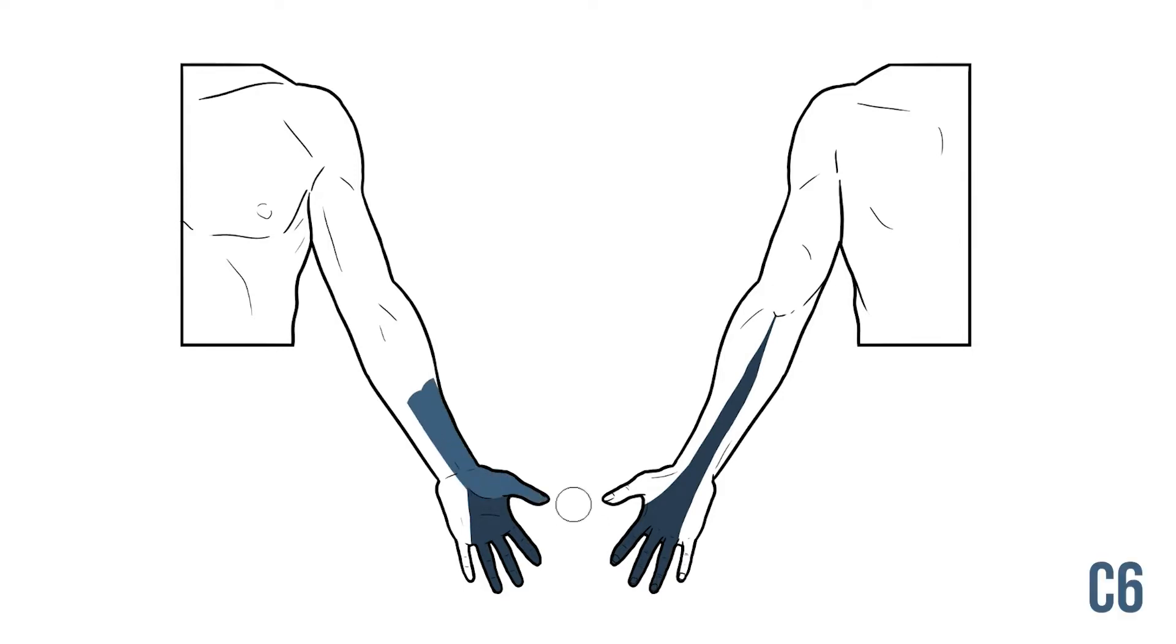Moving laterally, we have C6 supplying the thumb and the lateral forearm, C5 lies over the lateral aspect of the arm and parts of the shoulder, with C4 running from the shoulder into the neck.